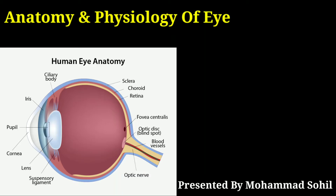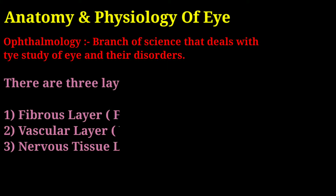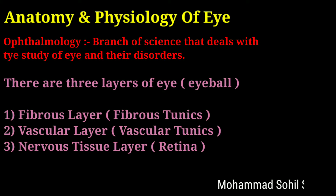Without any further delay, let's begin with today's session. The body has the ability to sense changes in its internal and external environment. Special sense organs are characterized by large and complex organs, each with a unique function. Sensory organs have special receptors that allow us to smell, taste, see, hear, and maintain equilibrium balance.